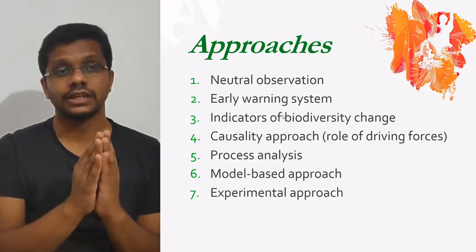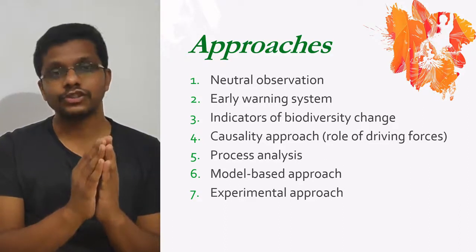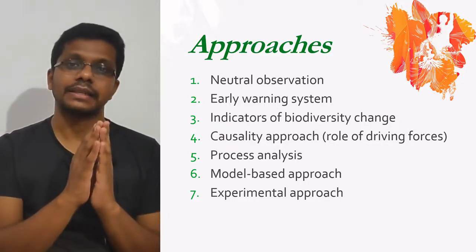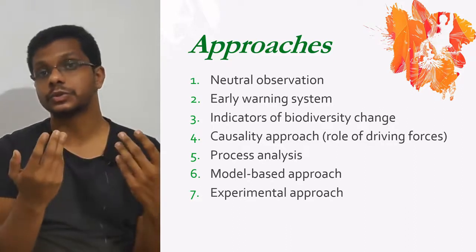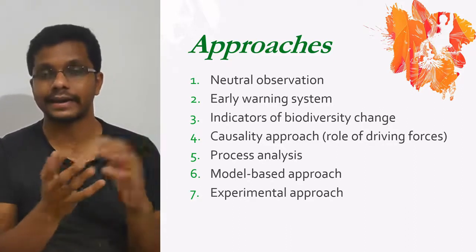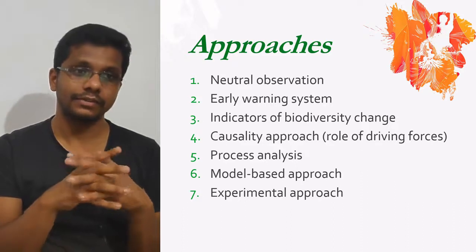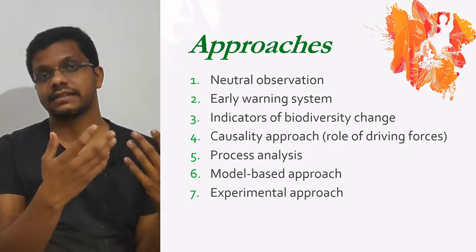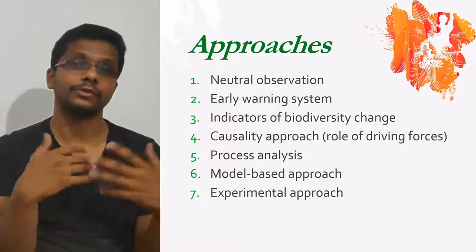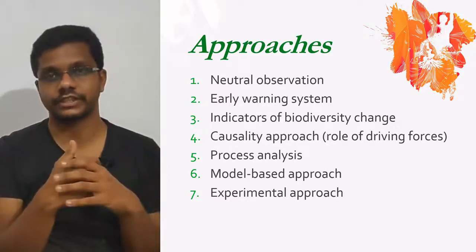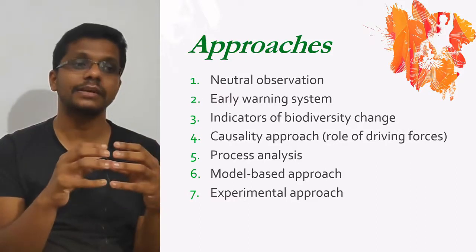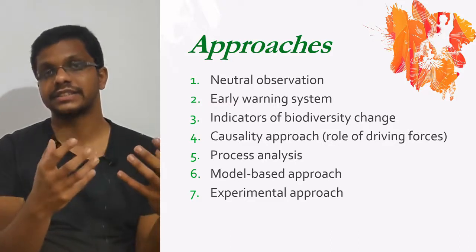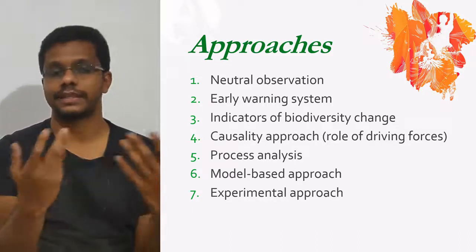Next, we have the early warning system approach. In this, we are actually studying the changes in biodiversity with some statistical expertise to understand what is going on — how biodiversity is changing. We want to get an idea about whether biodiversity levels are going below a critical level, so we have to do more conservation approaches. This is basically about getting an idea of biodiversity changes in an area, maybe in a forest or maybe in an ecosystem.